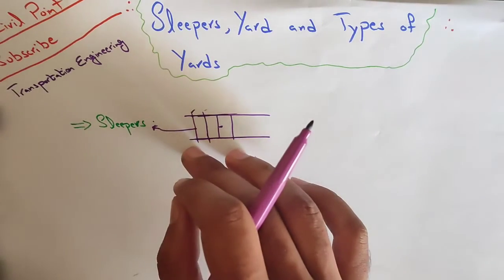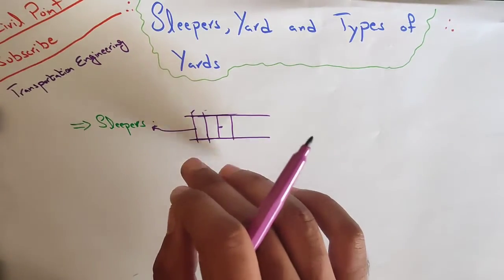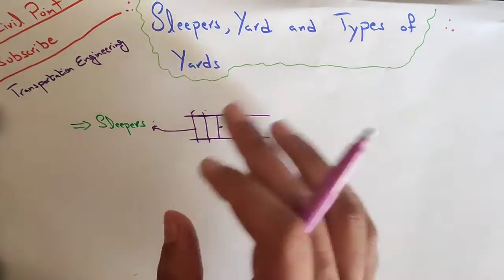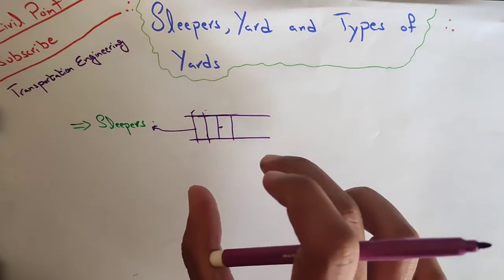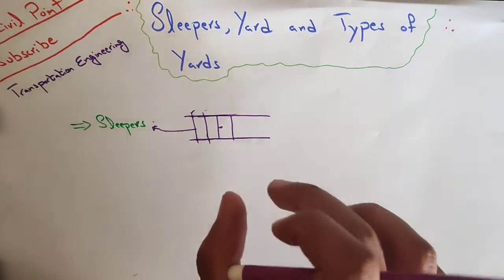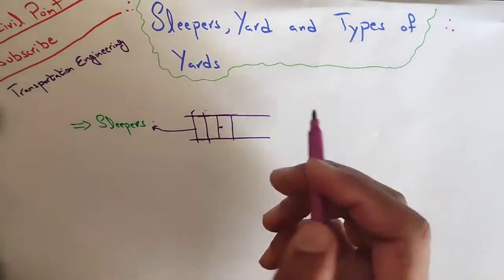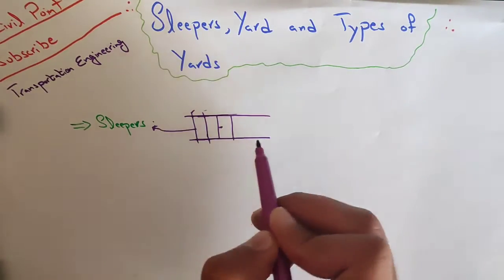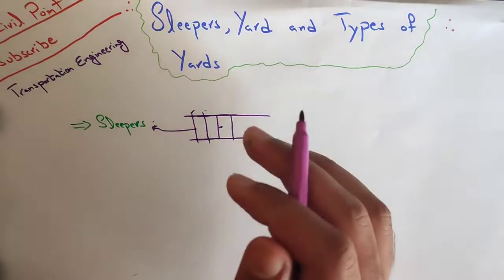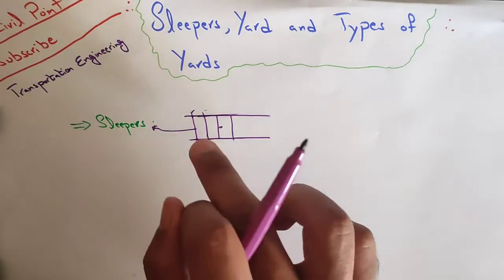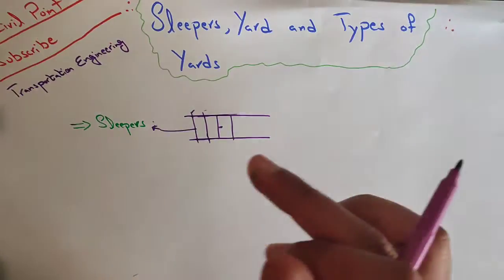They are also used to permit insulation of track for electrified sections and to act as an elastic medium between the rail and the ballast, and to absorb the vibration of the train. When the train passes, it creates vibration which is transferred firstly to the rails, then to the sleepers, then to the ballast.